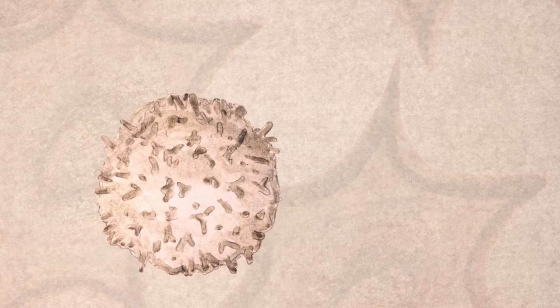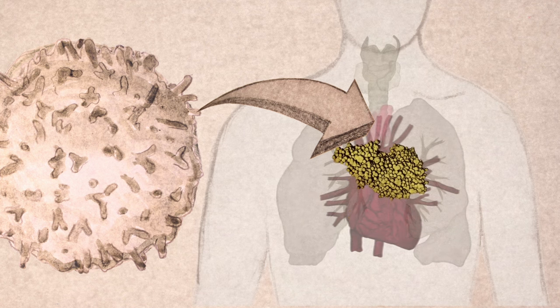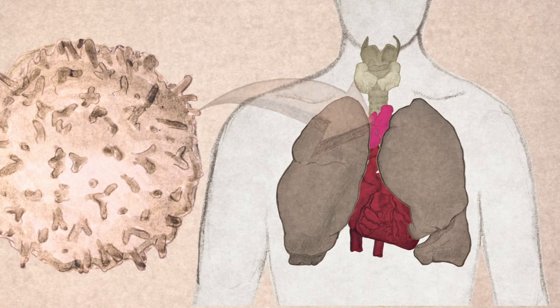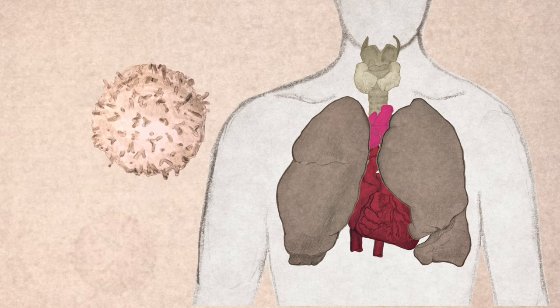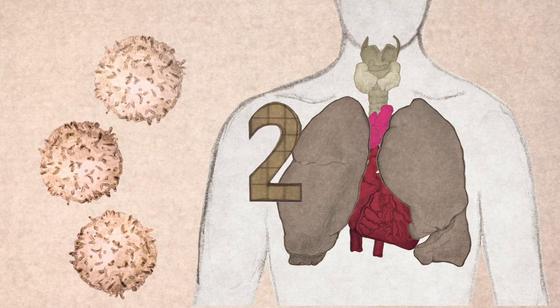After this stage, some of the developing T cells may recognize proteins from the healthy cells of our own body, which can be dangerous and cause autoimmunity, where they may target those cells and tissues. In the final stage, these cells are eliminated.